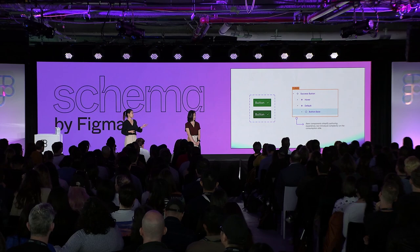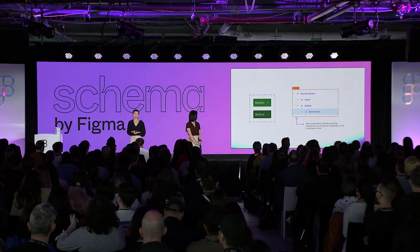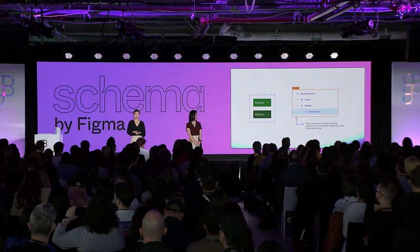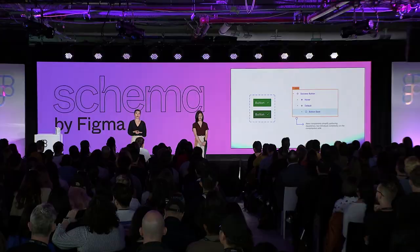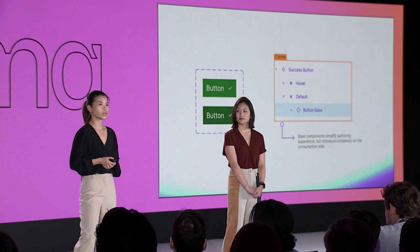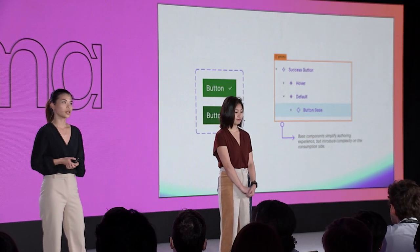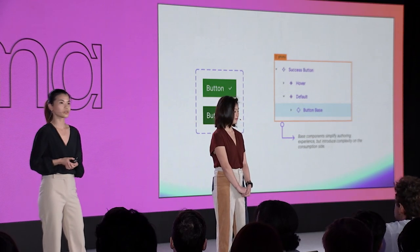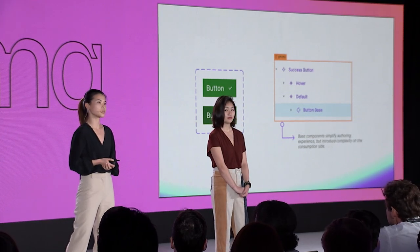Here's just a simple example of a base component. With only one nested layer it looks manageable, but if we have a more complicated component with multiple nested layers, it becomes really difficult for a consumer to select the instance layer they need in order to change what the component looks like. So even though base components can help design systems authors, they actually introduce a lot more complexity for design systems consumers.